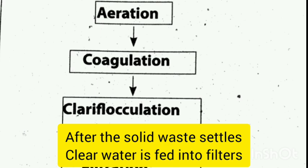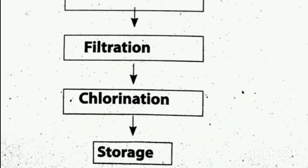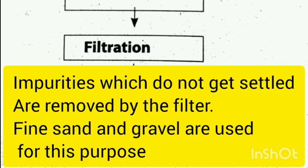Clear water is fed into filters. Filtration: impurities which do not get settled are removed by the filters. Fine sand and gravel are used respectively in the upper and lower portions of the filter unit.